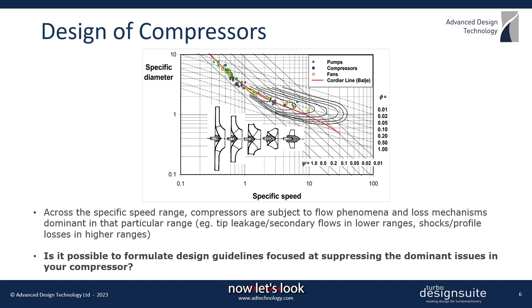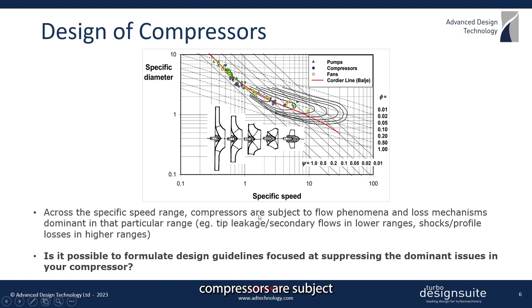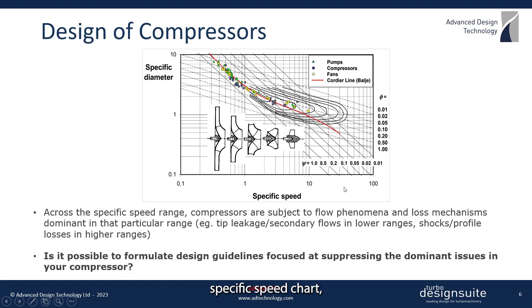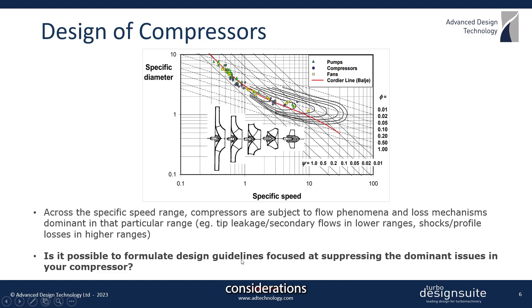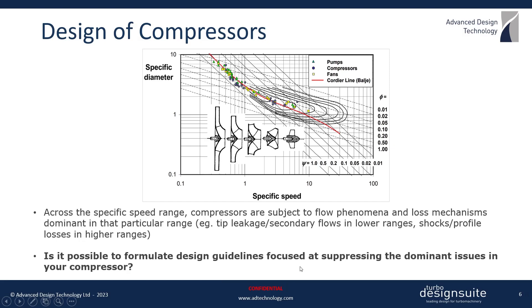Now let's look at the design of compressors in a bit more detail. Across the specific speed range, compressors are subject to various flow phenomena and loss mechanisms which are dominant in that particular range. As you can see in this specific speed chart, tip leakage and secondary flow effects are more dominant in the lower ranges, whereas shocks and profile losses take priority on the higher side. The question then is whether it's possible to come up with an optimal set of design guidelines based on these fluid dynamic considerations of reducing the dominant flow losses of your compressor — and this is what we aim to explore through this project.